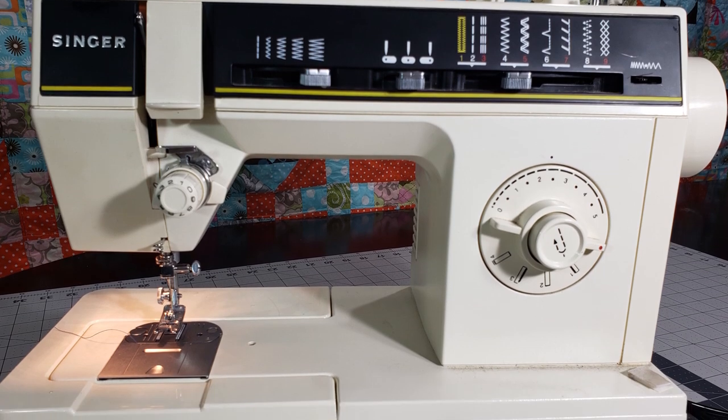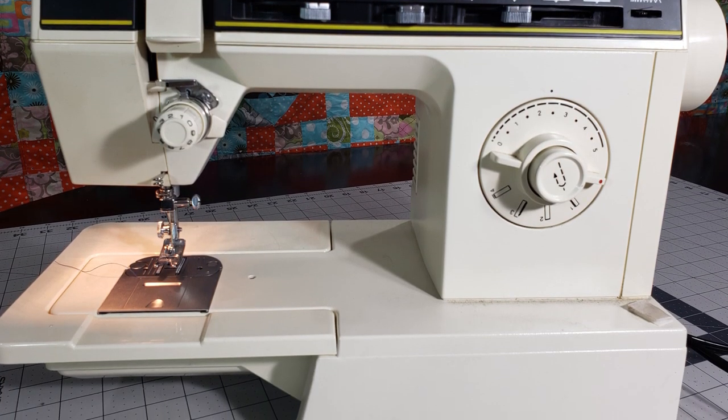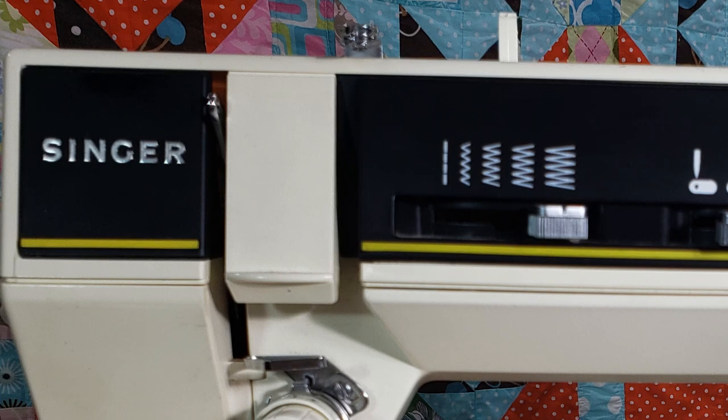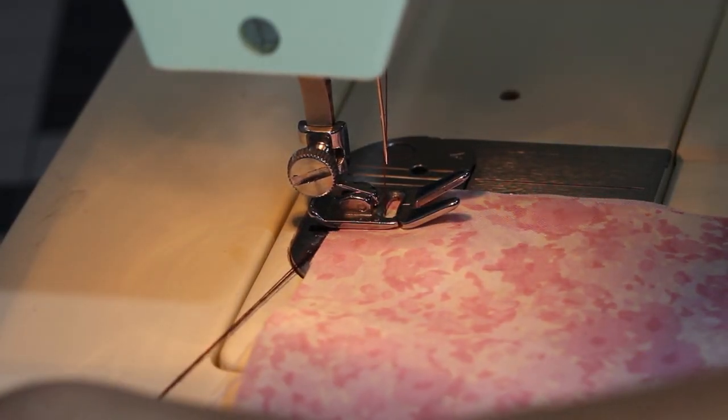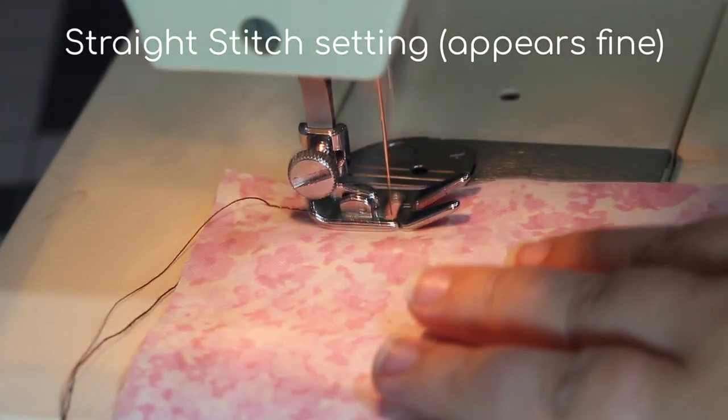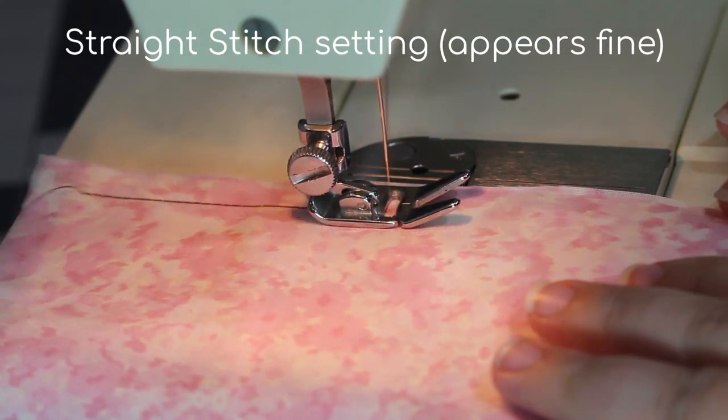This is the Singer 6215C sewing machine. I wasn't really seeking out a new machine, but when this one came up for auction on my local Bidding Wars Facebook group and no one was interested in it, I couldn't resist putting in a $1 bid. It was functioning, but it had timing issues.